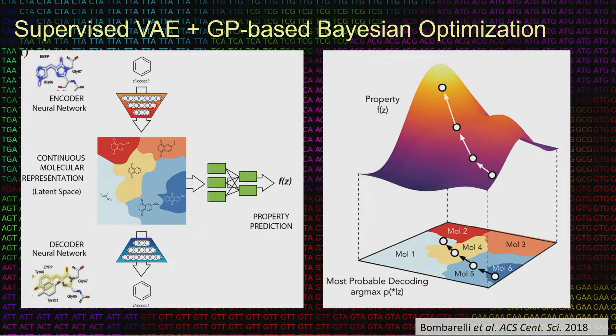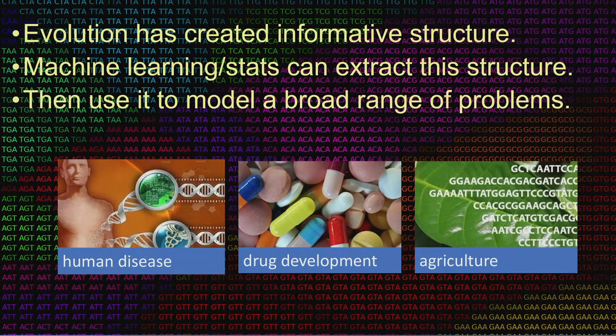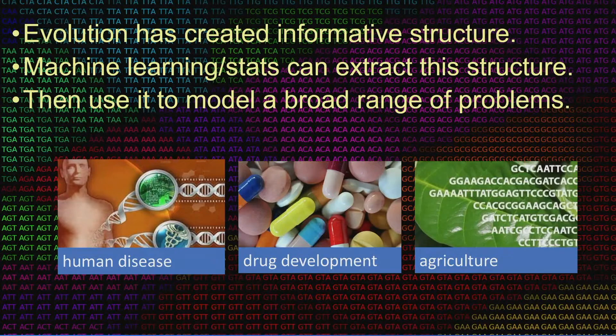I'm going to tell you about a method we developed in more detail shortly. But more broadly, evolution has created very informative structures in our DNA and other places. Machine learning and statistics — I've been doing this for over a decade — are very good at helping us understand and make sense of this structure. You can tackle a very broad range of problems at this intersection that are extremely exciting. I'll give you a flavor of some of them before diving deeper into this new one.